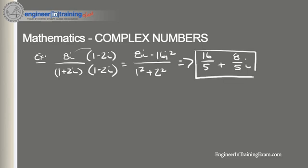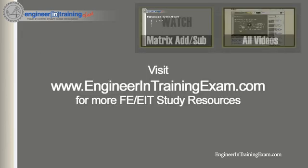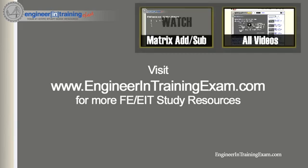That's it for now — a quick review of complex numbers. We covered how to add and subtract, how to multiply, defined what the conjugate is, and showed how to divide complex numbers to get an answer in standard form a plus bi. Visit engineerintrainingexam.com to send questions or feedback, subscribe to the YouTube channel, or sign up for the free EIT preparation boot camp. Take care, and we'll be talking soon!